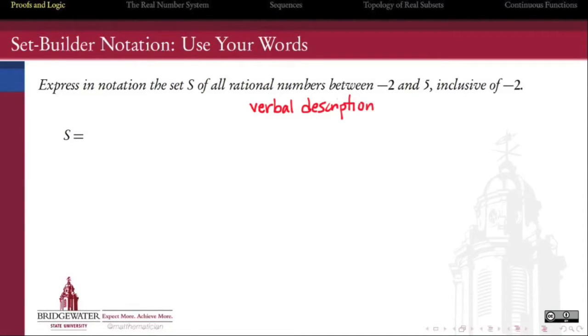In set builder notation, we can use a descriptive sentence to define the elements of our set. For example, if we want all the rational numbers between negative 2 and 5, we can write: is a rational number and between negative 2 and 5.